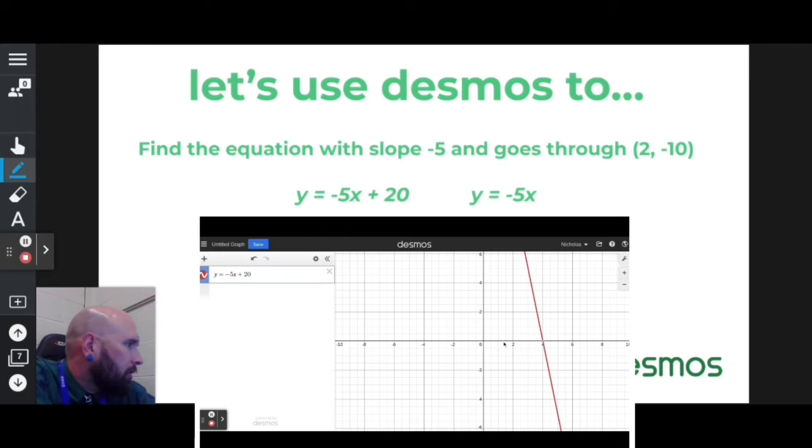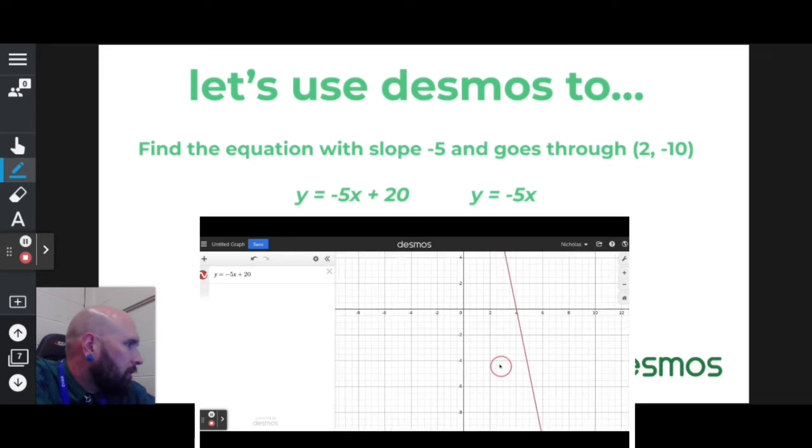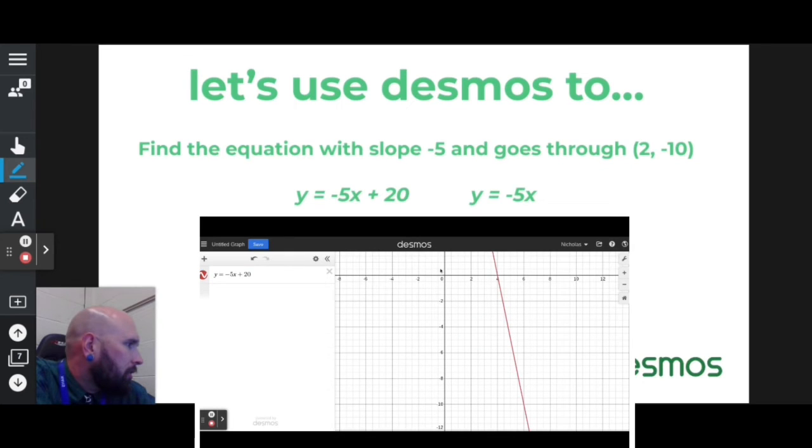Now I can't see (2, -10) because it would be way down here. So what I can do is either zoom out or pinch this, and I will see that (2, -10) won't work.